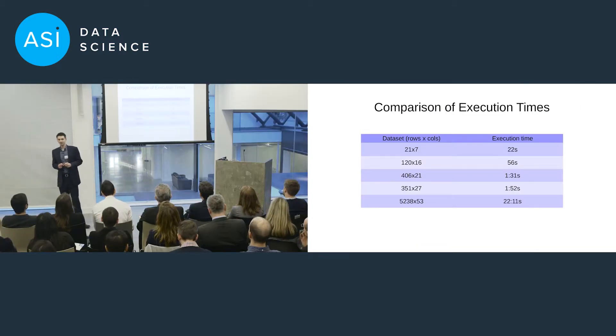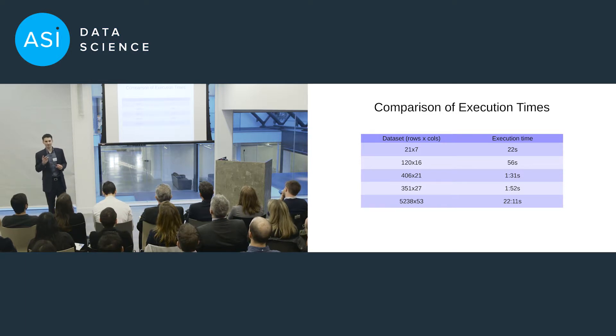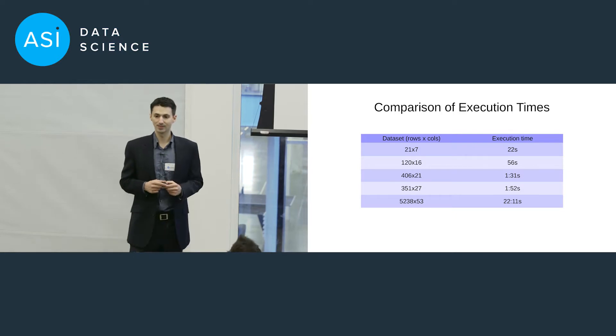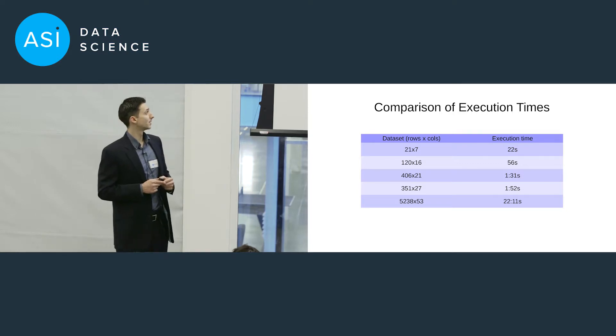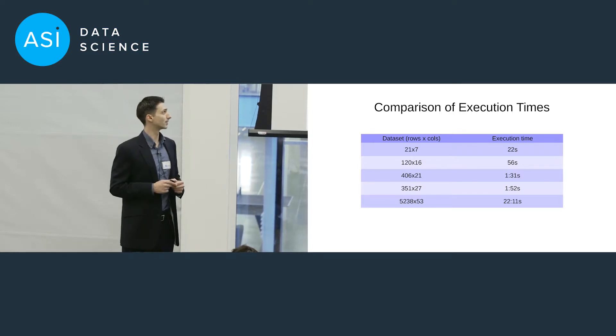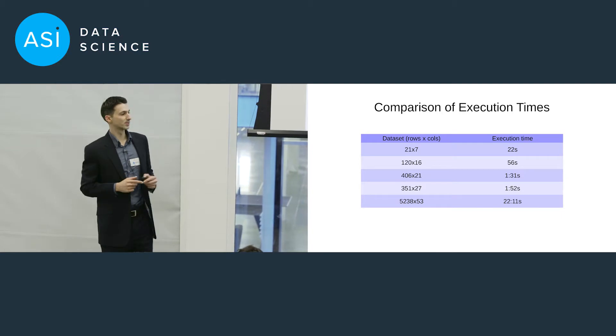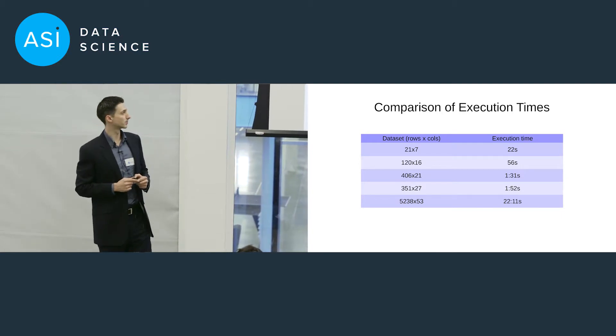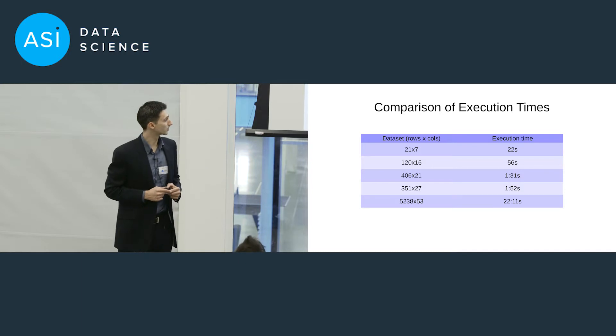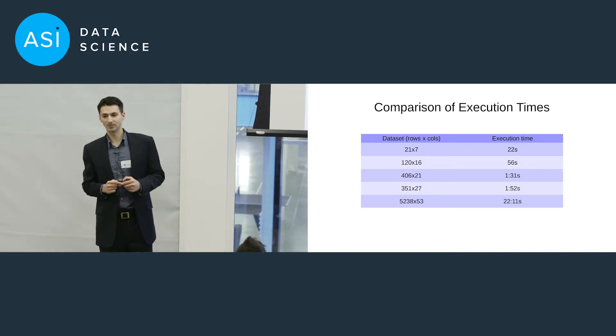Okay, so to start with, we're looking at how fast this lens library is. So the first thing to do is to get some data, to run it against the lens library and to see how well it performs. And what we see is it performs reasonably quickly for relatively small data sets. But looking towards the bottom for a medium-sized data set consisting of 5,000 or so rows with 53 columns, well, 22 minutes, that's perhaps not so ideal. So how do we make this better?